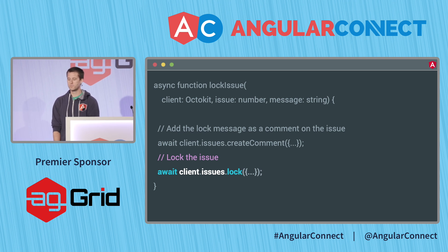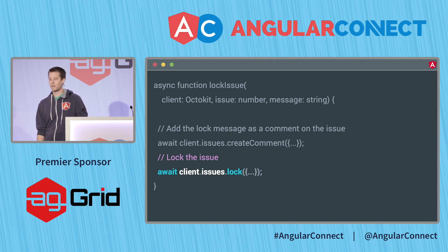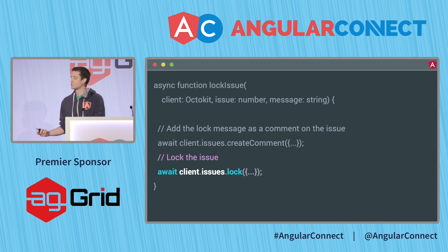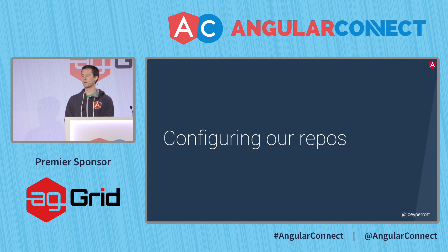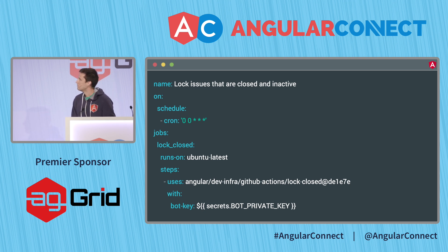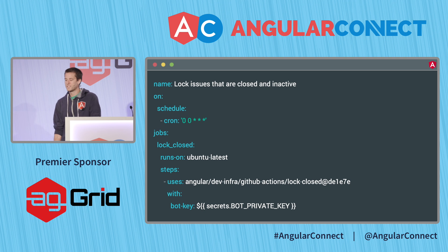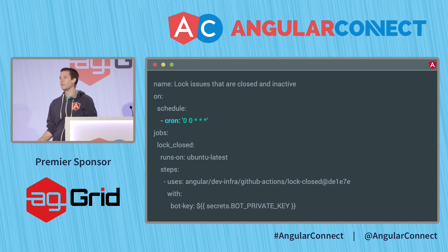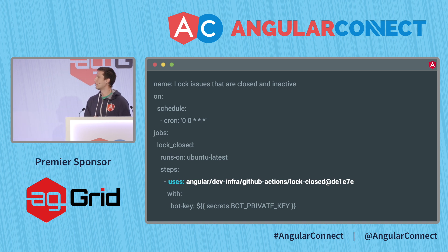The GitHub Action itself is relatively simple. We run this for our repository on a cron job, and it will lock all qualifying issues. To enable this, GitHub Actions are configured using a YAML file. This is what we use for the angular/angular repo — we set it up to run every day at midnight, and we just reference the lock-closed action that we already created.